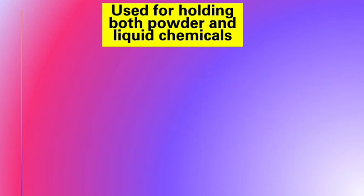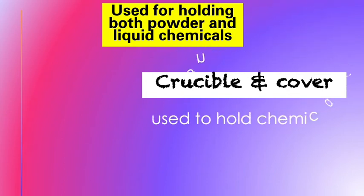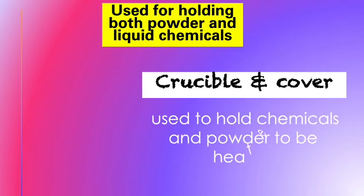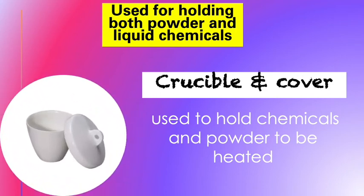Next one is a crucible and cover. It is used to hold chemicals and powder to be heated. Here's a picture of a crucible and cover.